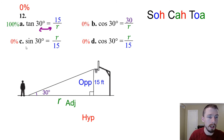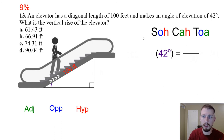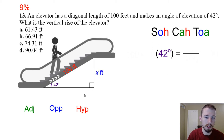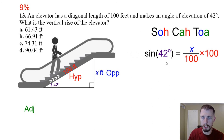Number thirteen — an elevator has a diagonal length of 100 feet making an angle of elevation of 42°. We want the vertical rise. The vertical rise is opposite to the angle and 100 is the hypotenuse, so we use sine: sin 42° = x / 100. Multiply both sides by 100: x = 100 sin 42°. Answer: B.